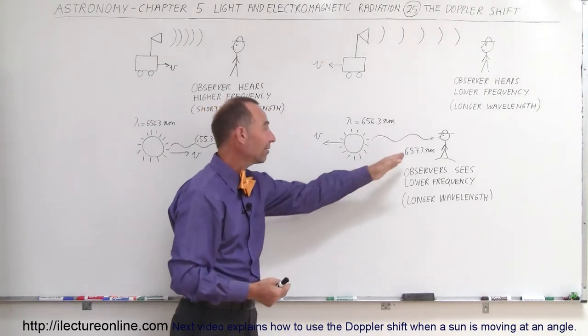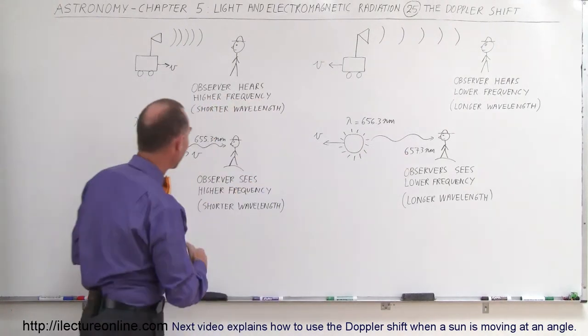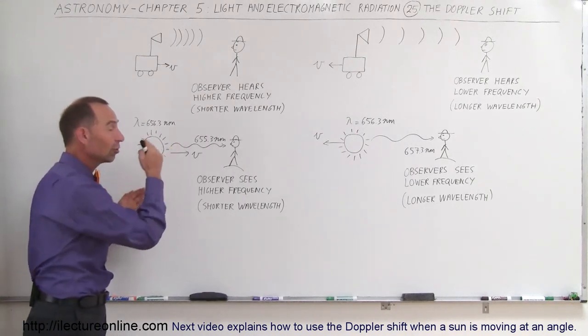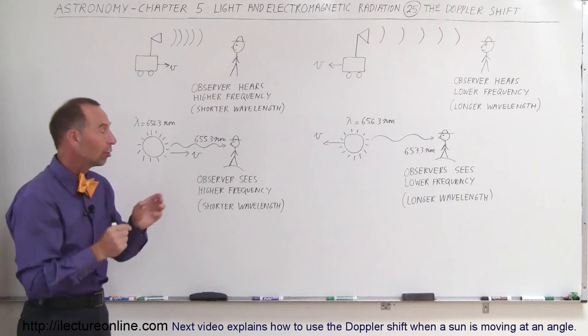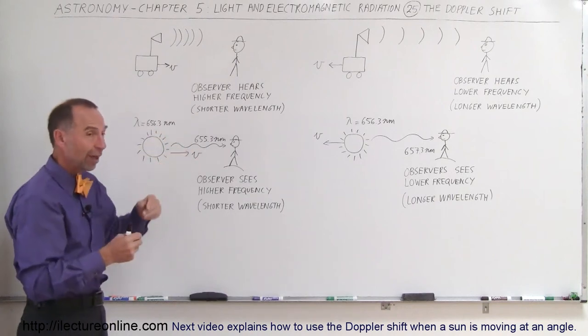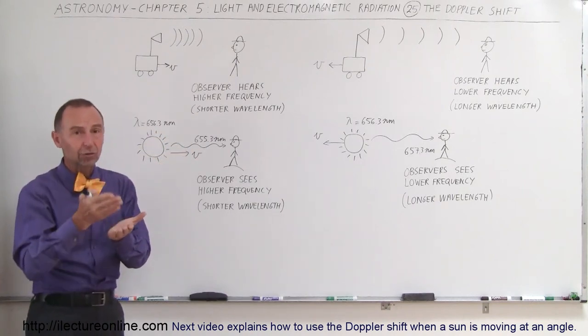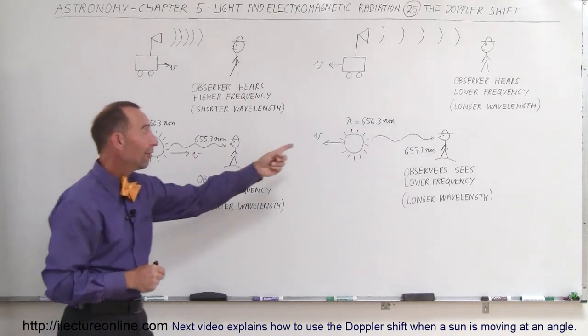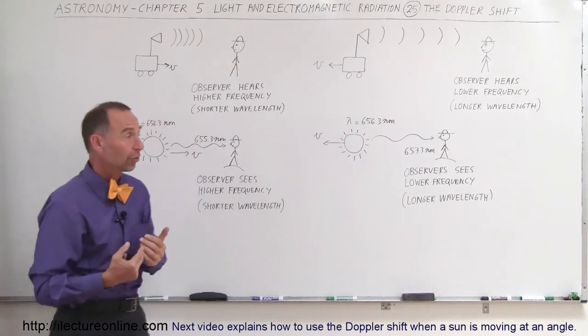So, longer wavelengths if the star is moving away from us and shorter wavelengths when the star is moving towards us, which means if we can then measure the wavelength of that light and know what it should be if it wasn't moving, for example, very specific wavelengths of hydrogen or helium or some other element, then we can actually figure out how fast the star was moving either towards us or away from us.